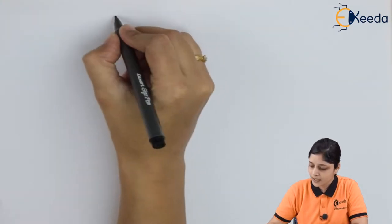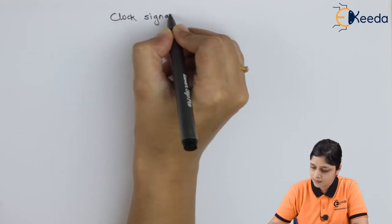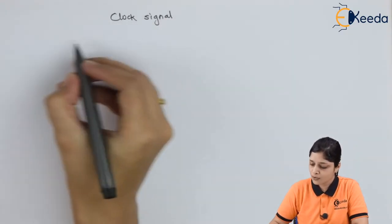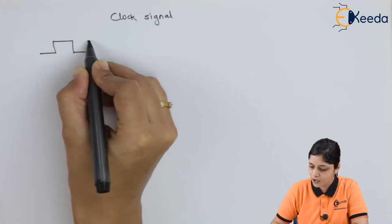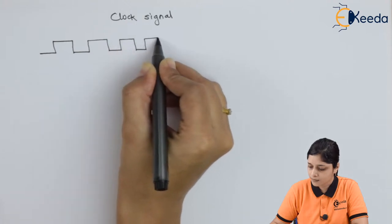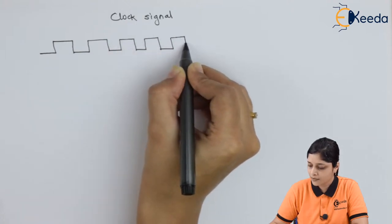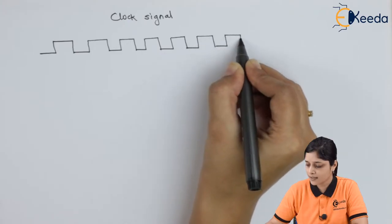So your heading is clock signal. Now, how to draw a clock signal? First of all, a clock signal consists of logic 0 and logic 1. In this way, you have to draw the pulses. These are called the digital pulses.